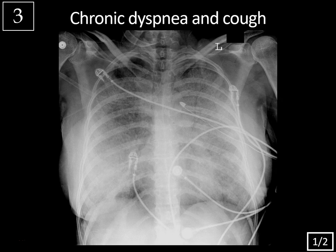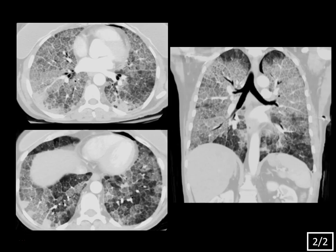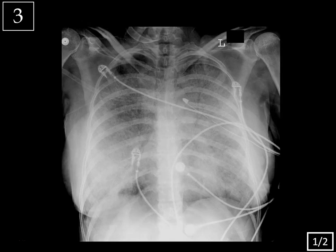Case three — chest X-ray, chronic dyspnea and cough. On this frontal chest X-ray, you see diffuse ground glass and airspace opacities throughout the lungs. This is nonspecific — depending on the history, it could be multifocal pneumonia, ARDS, or diffuse alveolar hemorrhage or edema.